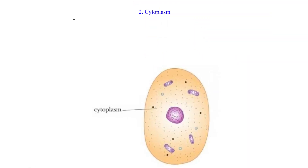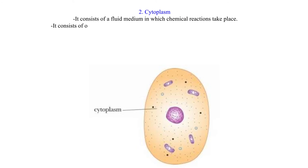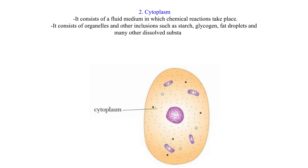Cytoplasm. It consists of a fluid medium in which chemical reactions take place. It consists of organelles and other inclusions such as starch, glycogen, fat droplets, and many other dissolved substances. Cytoplasm isn't static, hence undergoes a movement known as cytoplasmic streaming.